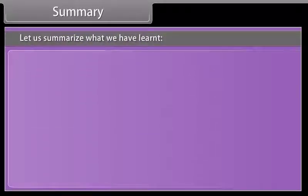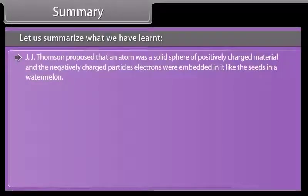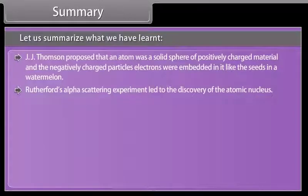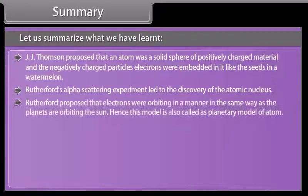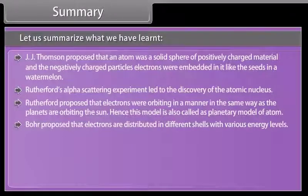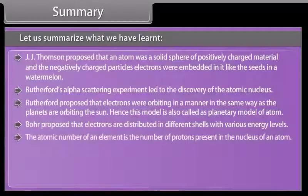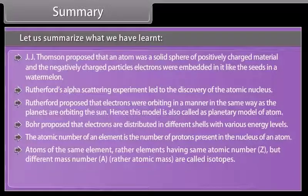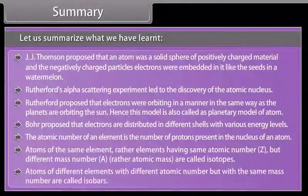Summary: J.J. Thomson proposed that an atom was a solid sphere of positively charged material and the negatively charged electrons were embedded in it like the seeds in a watermelon. Rutherford's alpha scattering experiment led to the discovery of the atomic nucleus, and he proposed that electrons orbit the nucleus in the same way planets orbit the sun — hence called the planetary model. Bohr proposed that electrons are distributed in different shells with various energy levels. The atomic number is the number of protons in the nucleus. Atoms with the same atomic number Z but different mass number A are called isotopes, while atoms with different atomic numbers but the same mass number are called isobars.